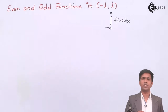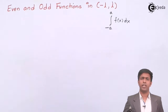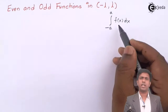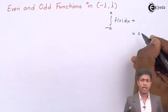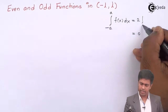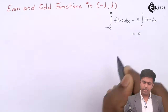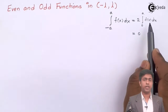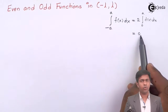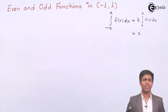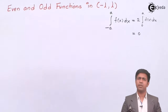The shortest way is by using the properties of integration. Whenever we get this type of integration, it has two values: one is zero, and another is two times the integration from zero to a of f of x dx. The first result applies if f of x is even, and the value is zero if f of x is odd.